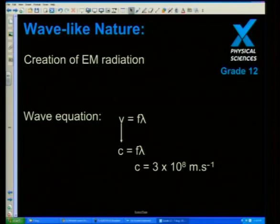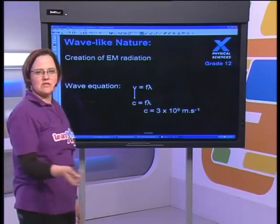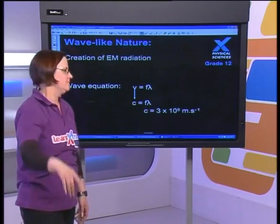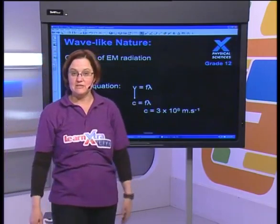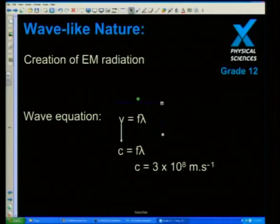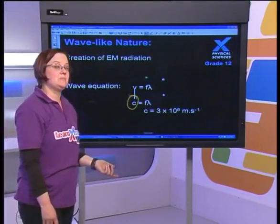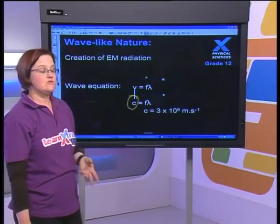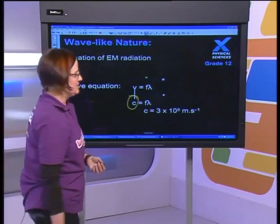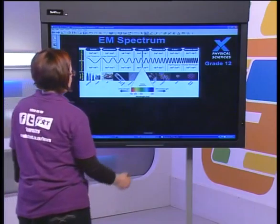The wave equation v = fλ — you did this in sound and it's still valid for a wave — except now we use a special version: instead of v we use c, because c is specifically the speed of electromagnetic radiation. You've learned it is the speed of light — light is just one part of the electromagnetic spectrum. C equals three times ten to the eight.